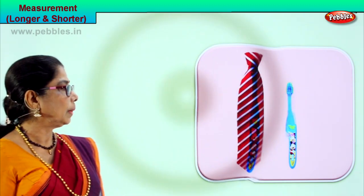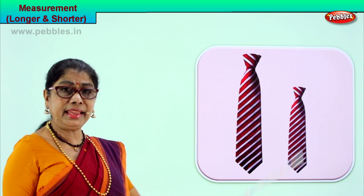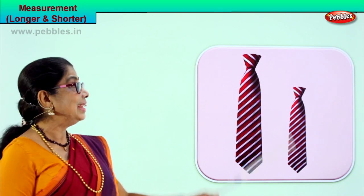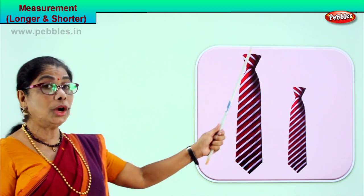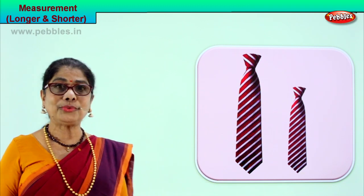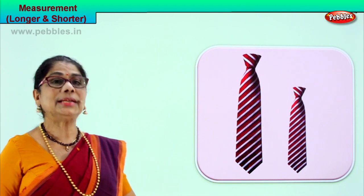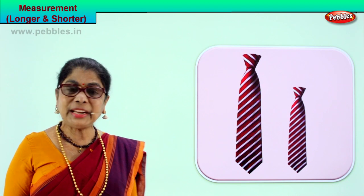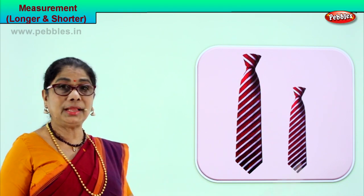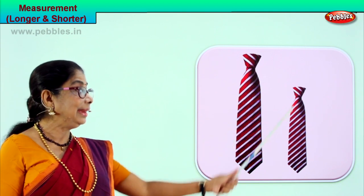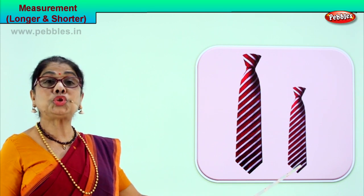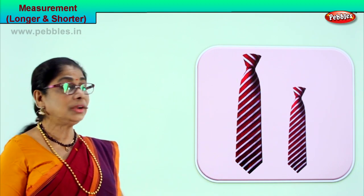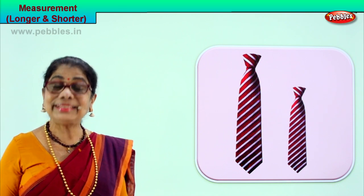Let's look at another picture. Look at the length of this tie and this tie. Do you wear a tie to school? Daddy wears it to work. This tie is daddy's — it is longer than your tie that you wear to school. This is a short tie and this is a long tie. What are we doing? Comparing two measurements — longer, shorter. This tie is longer than this tie, or this tie is shorter than this tie. Now you know what is longer and shorter. You will learn to compare measurements.